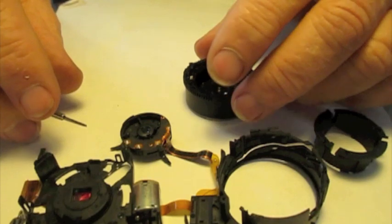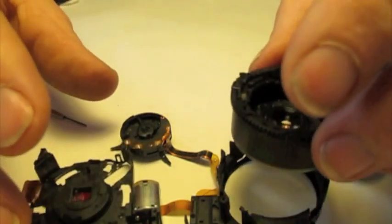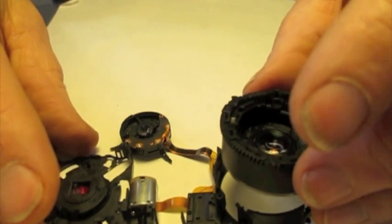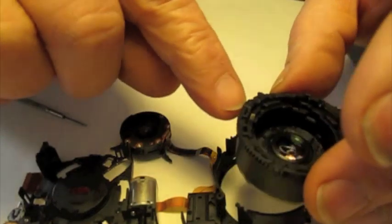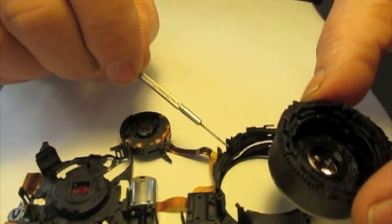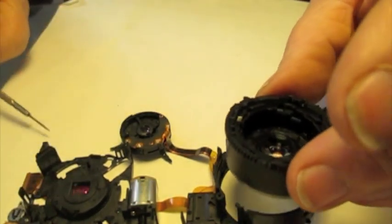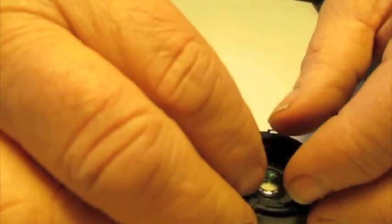Okay, now we can take our whole group and put it into our outer housing. This tab is going to fit over our aperture cable slot here, so we want to get this in this position like this.